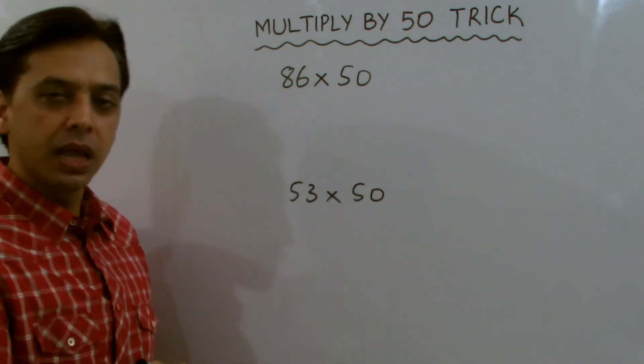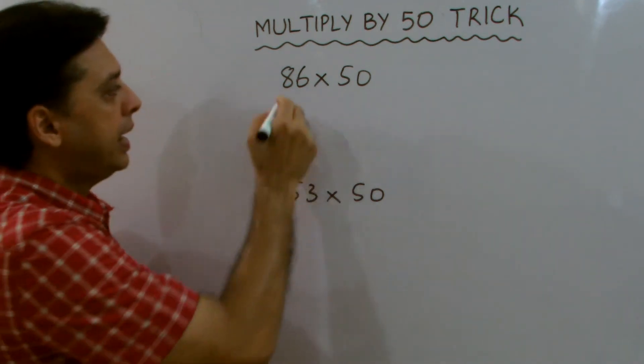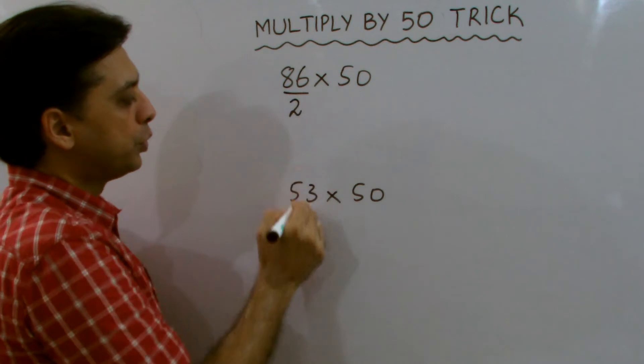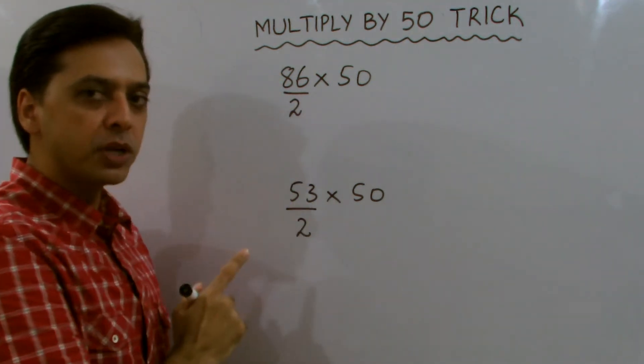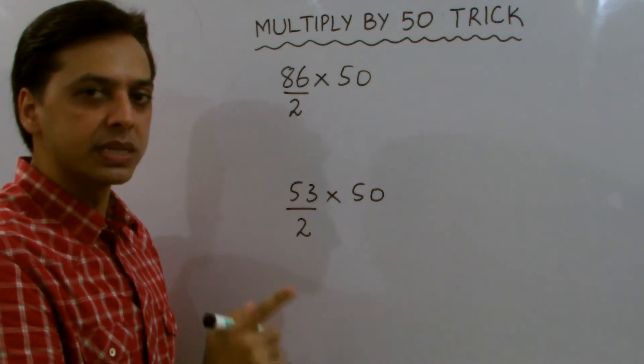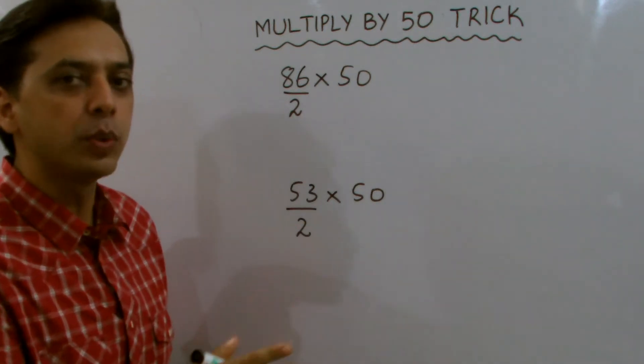Instead of multiplication, I'll use division and divide the number by 2. When dividing these numbers by 2, the remainder will be either 0 or 1.